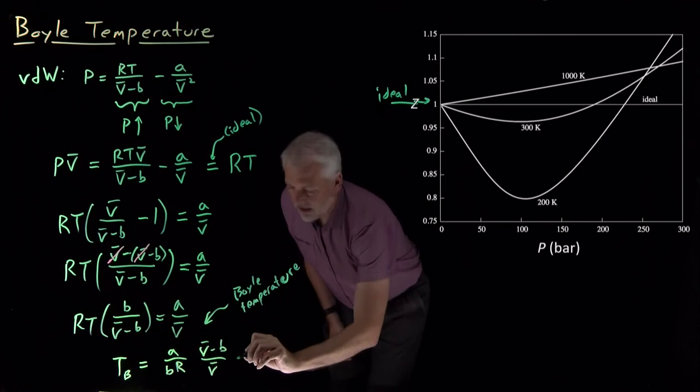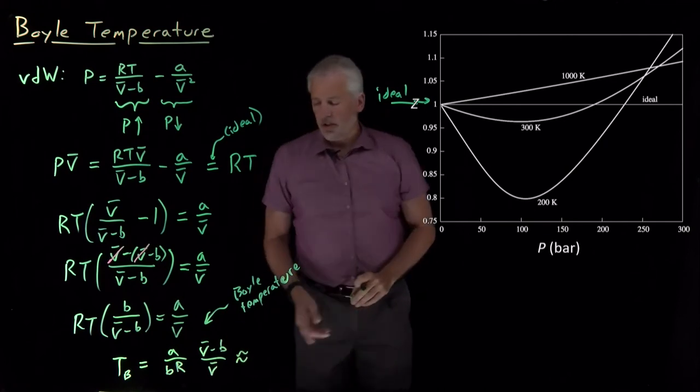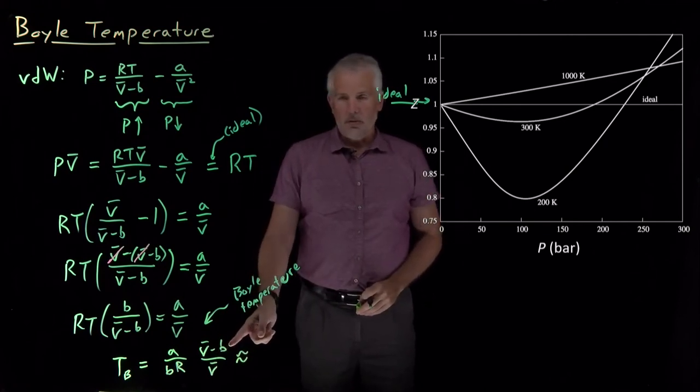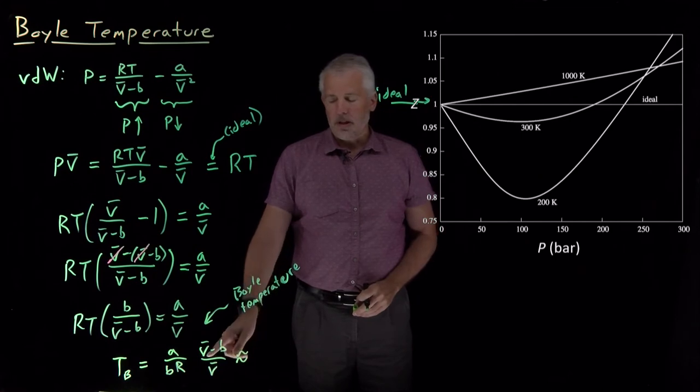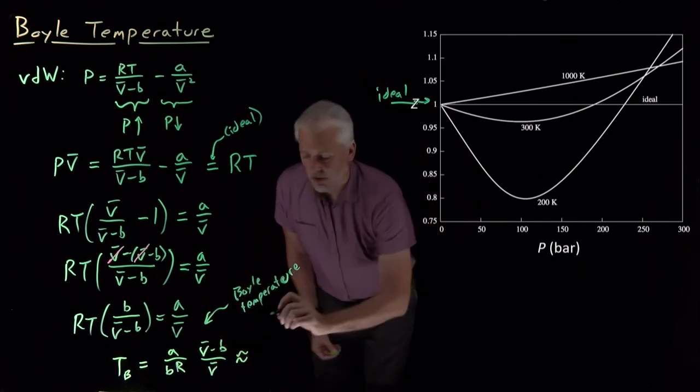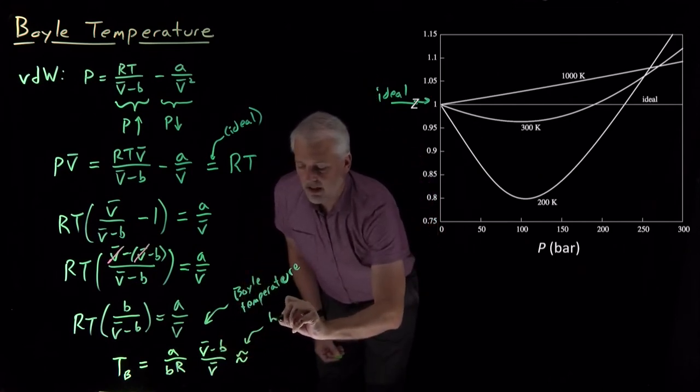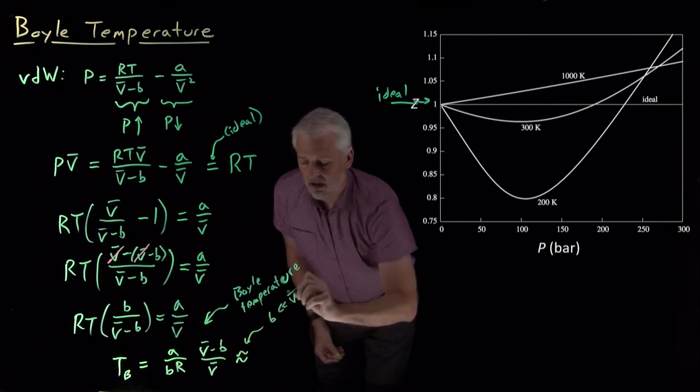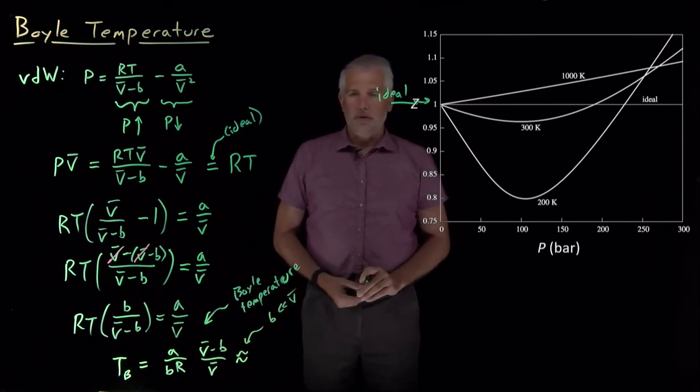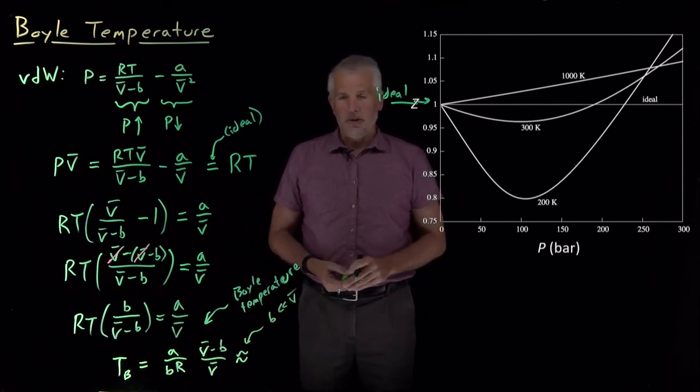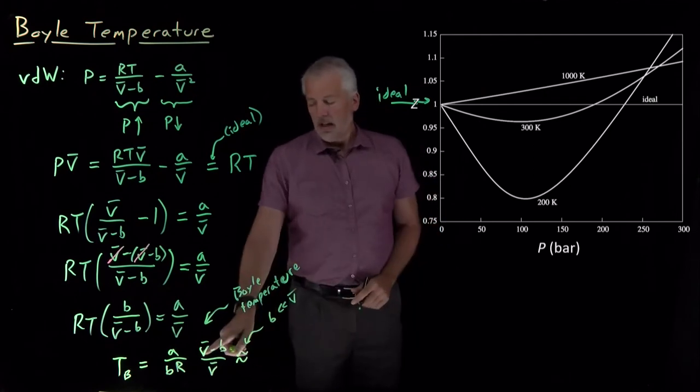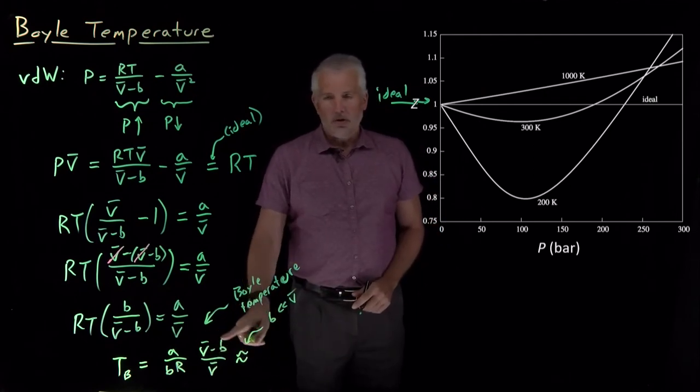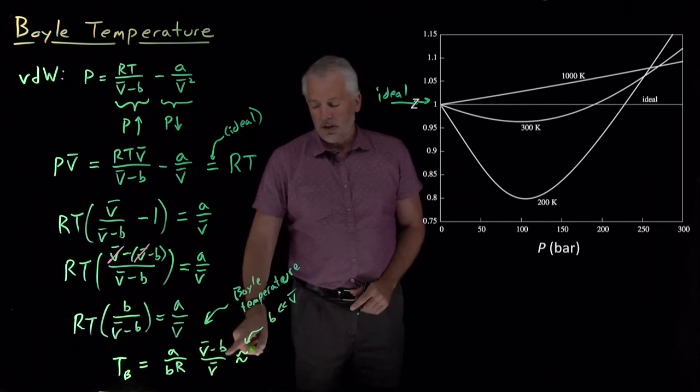And in fact, if we say, under most conditions, the volume of the molecules is much, much smaller than the volume of the container that they occupy. So if I, in this step, if I say B is much, much less than the molecular volume, if I'm letting the gas occupy a box that's much bigger than the molecules themselves, then V bar minus B is pretty close to V bar, and then this ratio is pretty close to one.